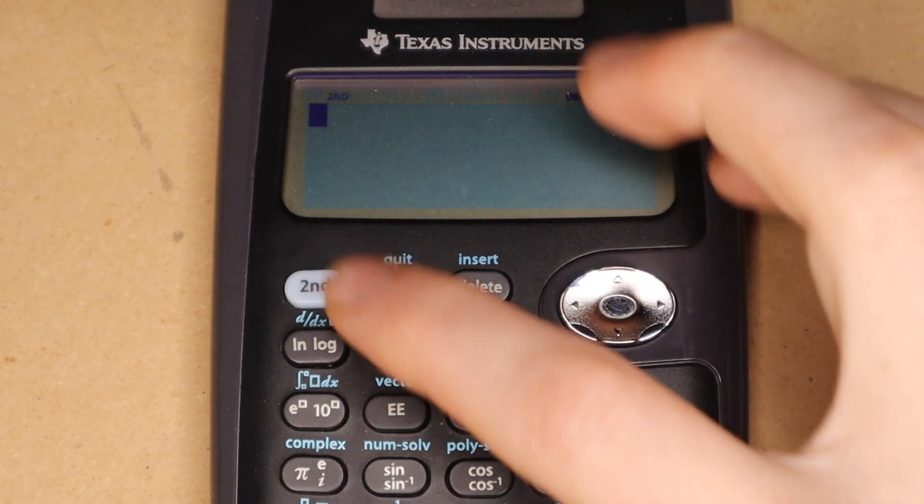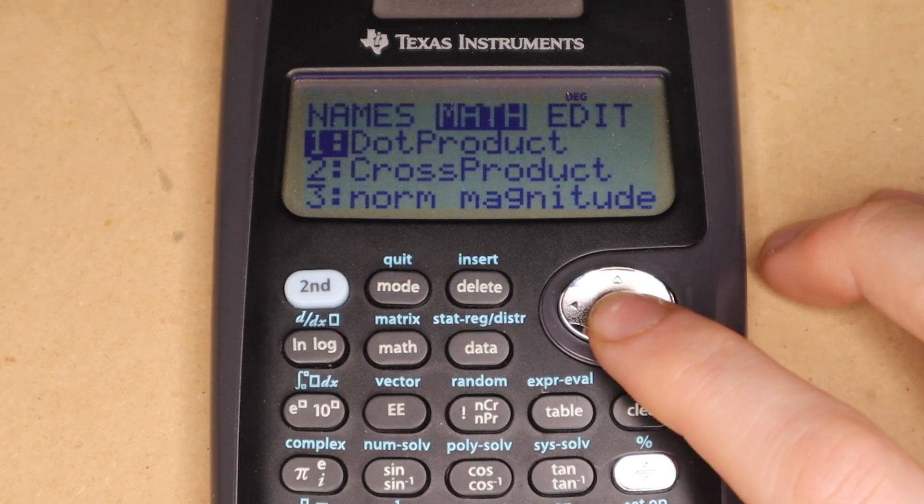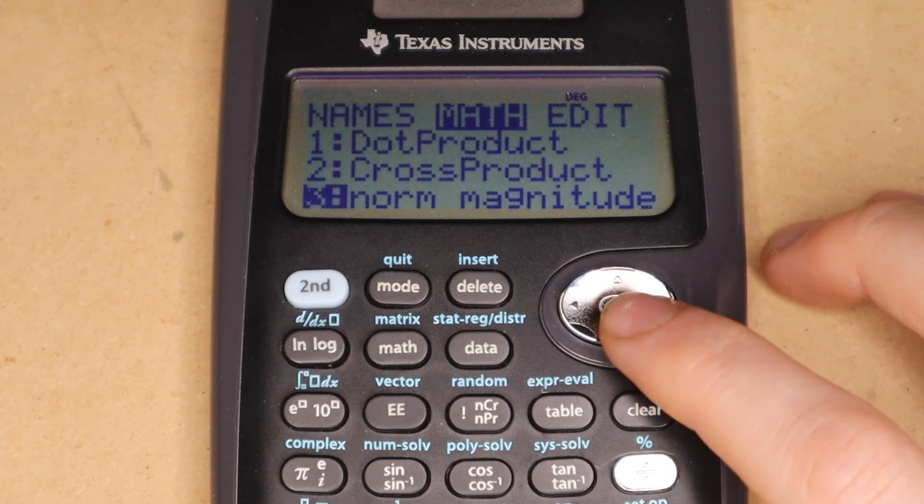And similar to the matrix menu, there is a menu for vectors. It operates pretty much the same. And here are the three built-in operations.